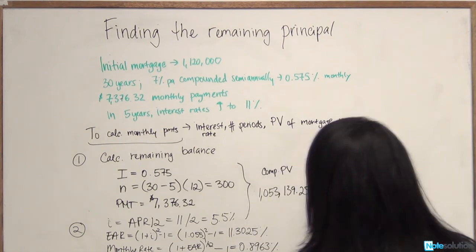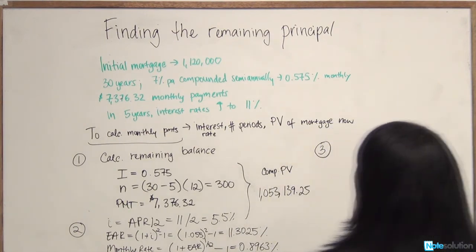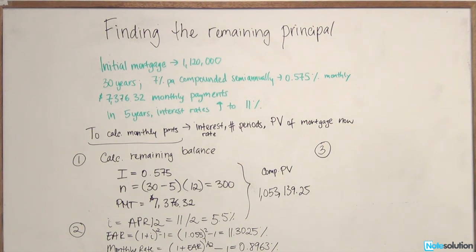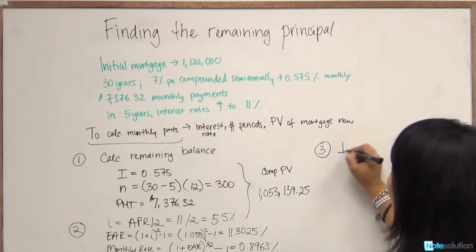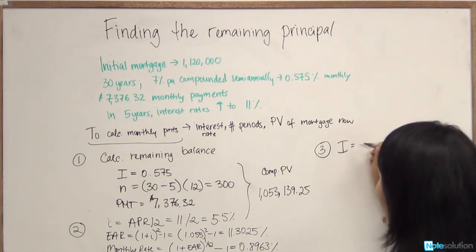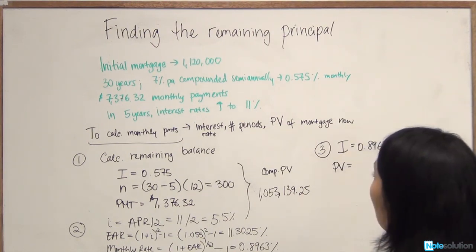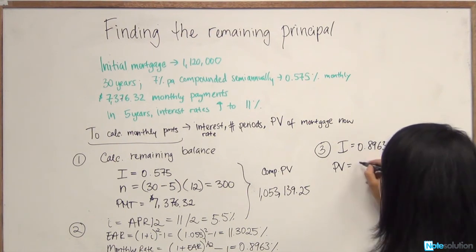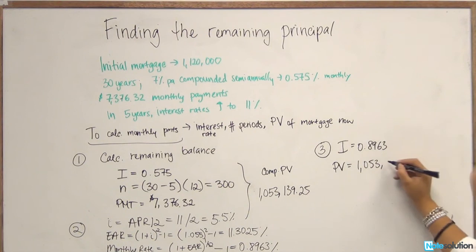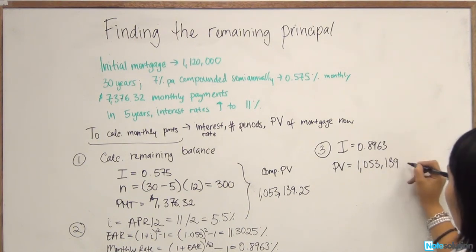Finally, we can compute the new payment. So we have everything we need to find the new monthly payment. We have our I. We just calculated in step 2, 0.8963. We have the present value of our mortgage. That's just the remaining balance on the remaining principal on the mortgage, $1,053,139.25.